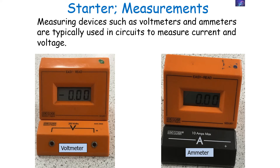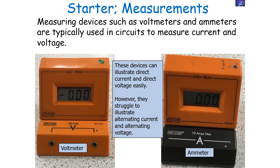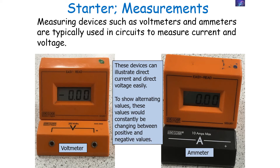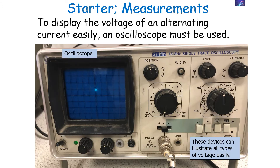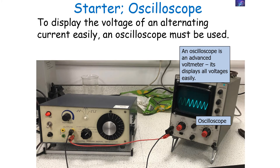Measuring devices such as voltmeters and ammeters are typically used in circuits to measure current and voltage, but these devices can illustrate direct current and voltage easily. However, they struggle to illustrate alternating current and voltage easily, because the values would constantly be changing between positive and negative. So another device must be used — to display an alternating potential difference or alternating EMF, an oscilloscope must be used. These devices can illustrate all types of voltage easily, so we can consider an oscilloscope as an advanced voltmeter.